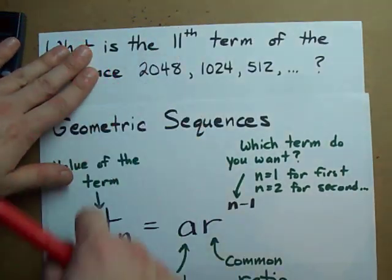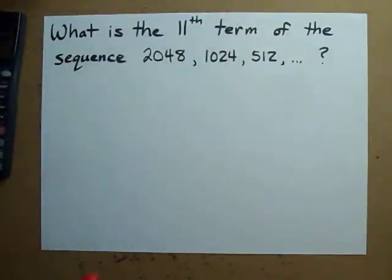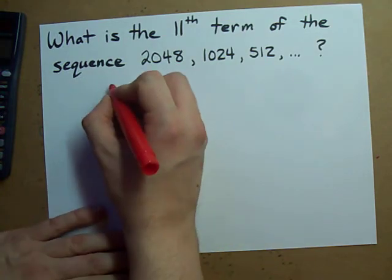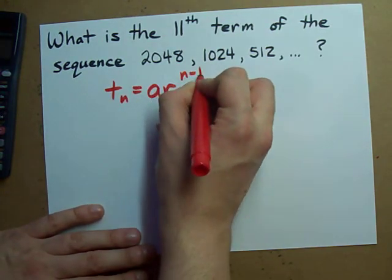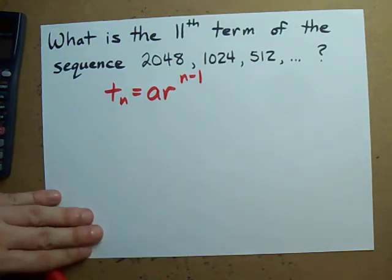In this case, we want the eleventh term. So let's use this formula. The formula again: t_n equals ar to the n minus 1 for a geometric sequence.